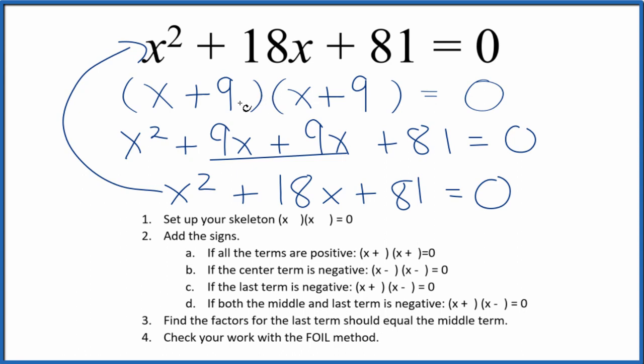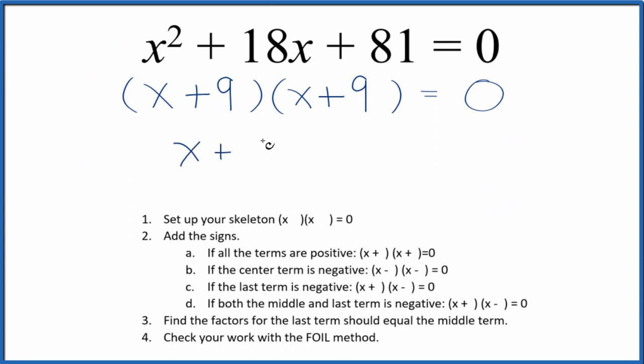We should now check and see what values of x will make this side of the equation equal to 0. 0 equals 0, that's a true statement. So we could say x + 9 equals 0, which means x equals negative 9. And this is the same, so this is all we need to do.